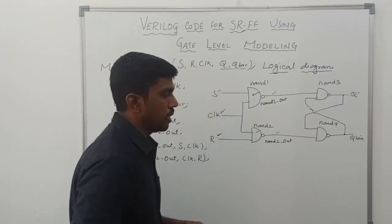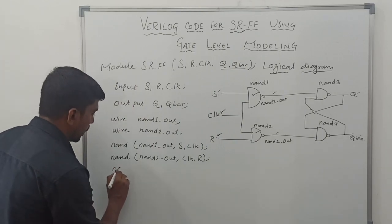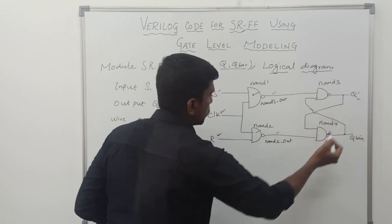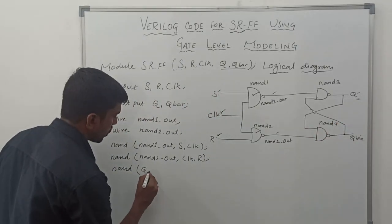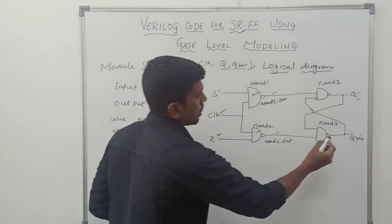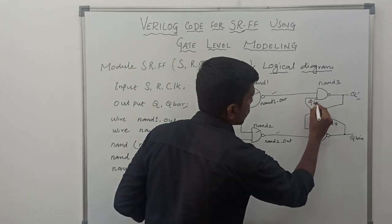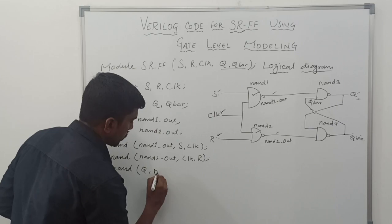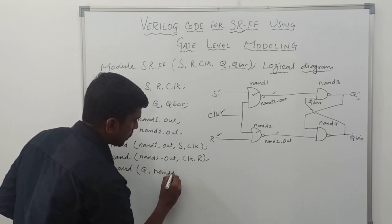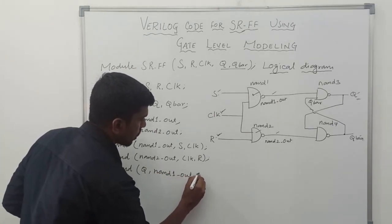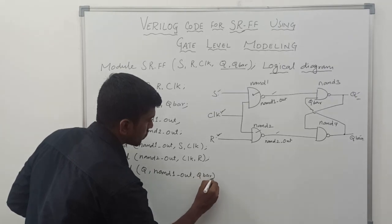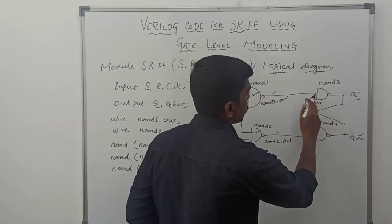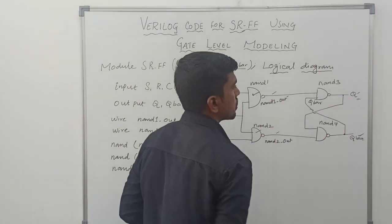Then we consider the third NAND gate. The output of NAND3 is Q. The input signals are NAND1-out and Q bar. So NAND1-out and Q bar are the two input signals of NAND3, whose output is Q.